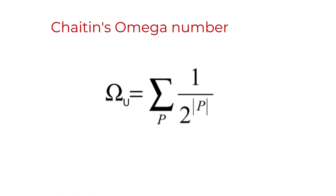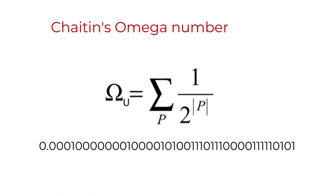Coming back to the definition of Chaitin's omega: every time a computer program halts, it contributes to the value of omega by determining a binary sequence that can be seen as a binary expansion of a real number between 0 and 1, because this is a probability. For example, in 2007, one of my former PhD co-advisors, Christine Kalut, computed the first 43 bits of a Chaitin omega for a certain universal Turing machine. The first digits of this omega are shown here.